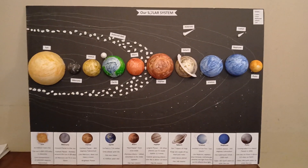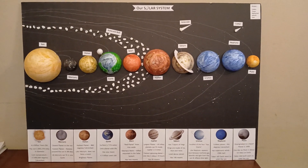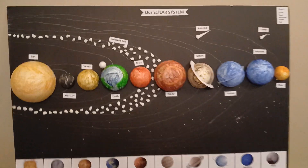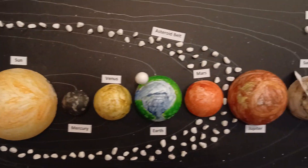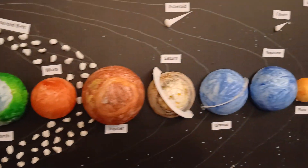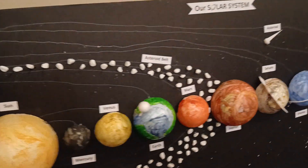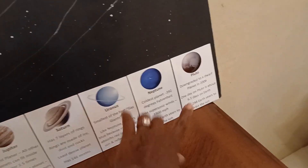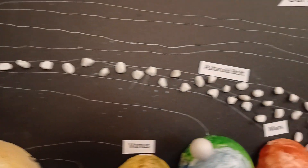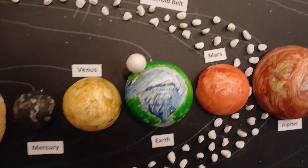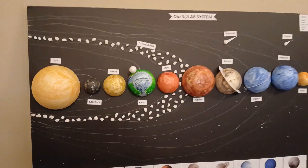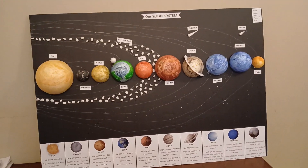Hi guys, today I'm going to show you how to make a 3D solar system poster. We have the solar system on a poster board with labels, it has an asteroid belt, and it's pretty cool. Let's make it!